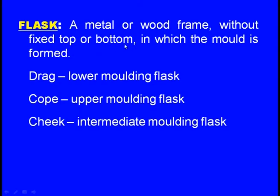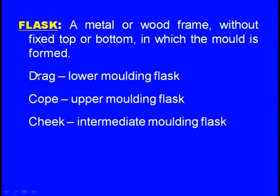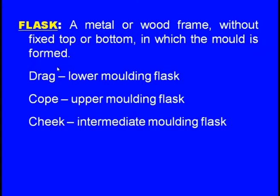First, the flask: a metal or wood frame without fixed top or bottom into which the mould is formed. It is a metallic or wooden box without top and bottom, inside which we compact the moulding sand around the pattern, and later the pattern is withdrawn. The flask is of three types: drag, cope, and cheek. The lower moulding flask is known as drag, and the upper moulding flask is known as cope.